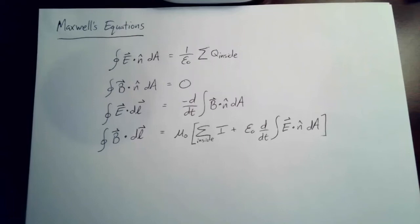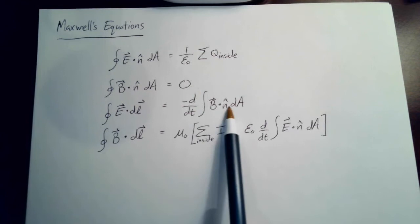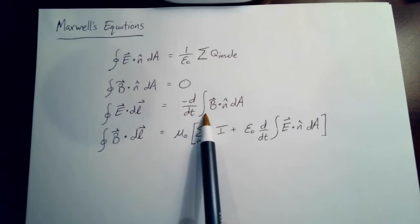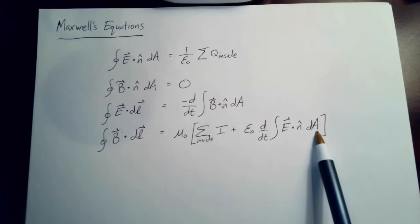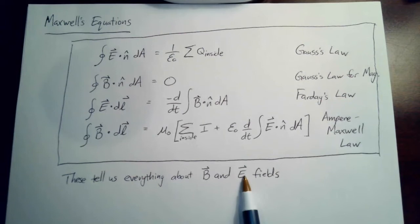Here are Maxwell's equations in all their glory. We have Gauss's law, Gauss's law for magnetism, Faraday's law — those three we've already developed — and then Ampere's law with Maxwell's correction. In the full written-out form, Φ_E is the electric flux and Φ_B is the magnetic flux. These four equations tell us everything we could want to know about magnetic and electric fields.